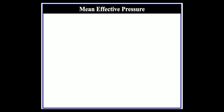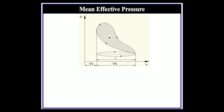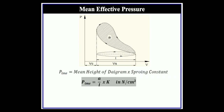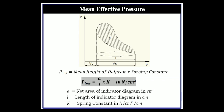The first parameter is mean effective pressure. To find indicated mean effective pressure, we use an indicator device to plot an indicator diagram. From this diagram, the formula is: mean height of diagram multiplied by spring constant k. The mean height is calculated as net work done (area 'a') divided by the length of the indicator diagram.